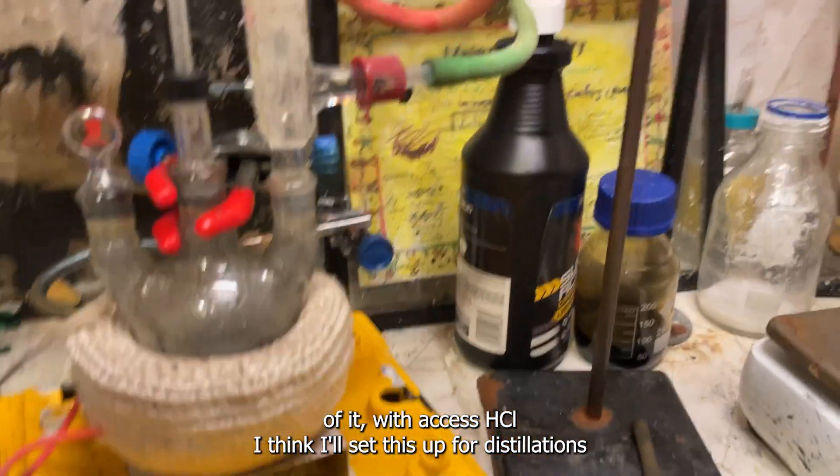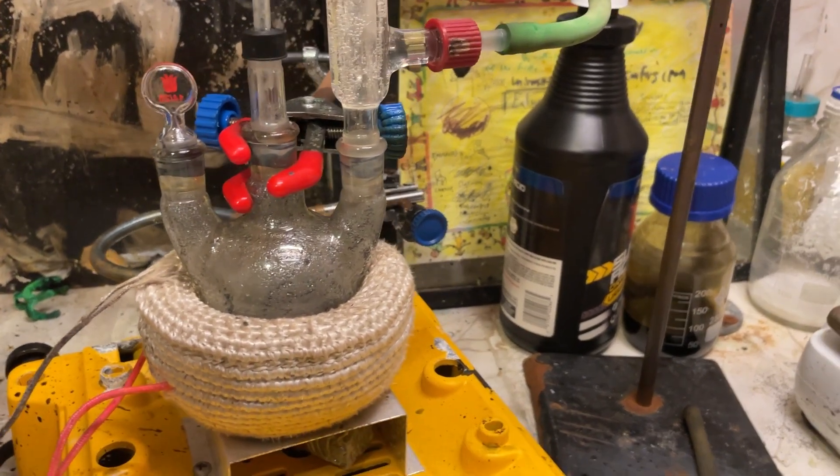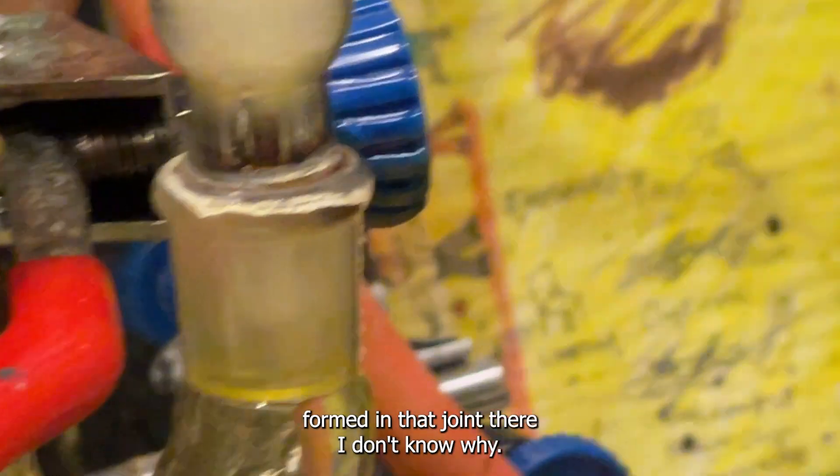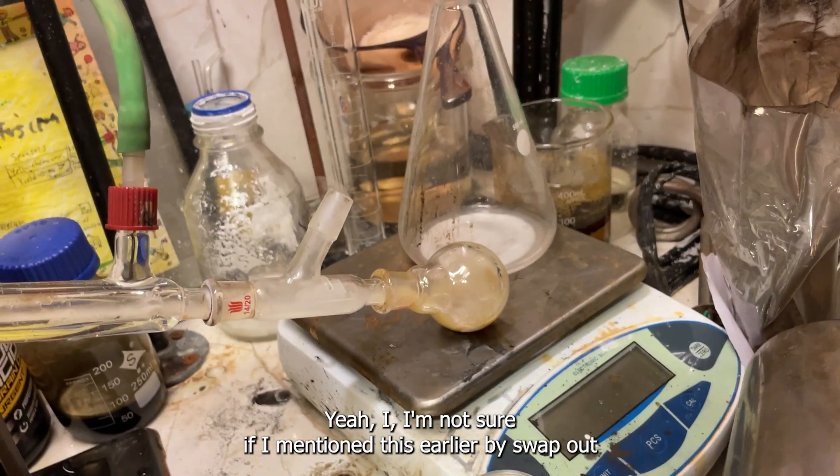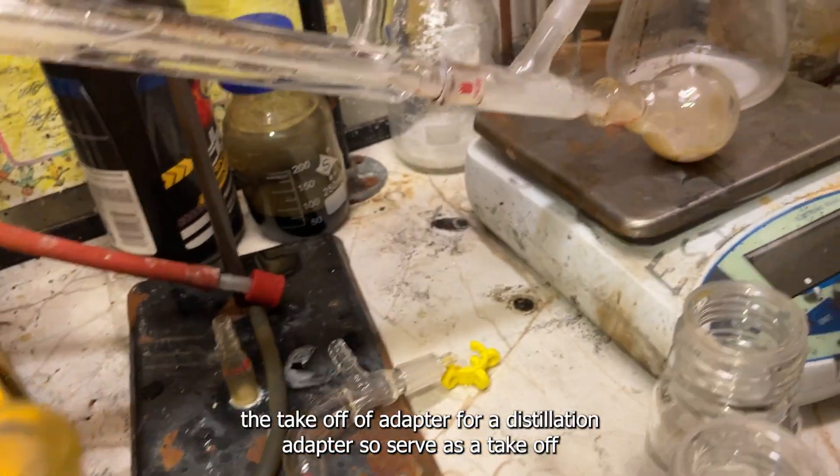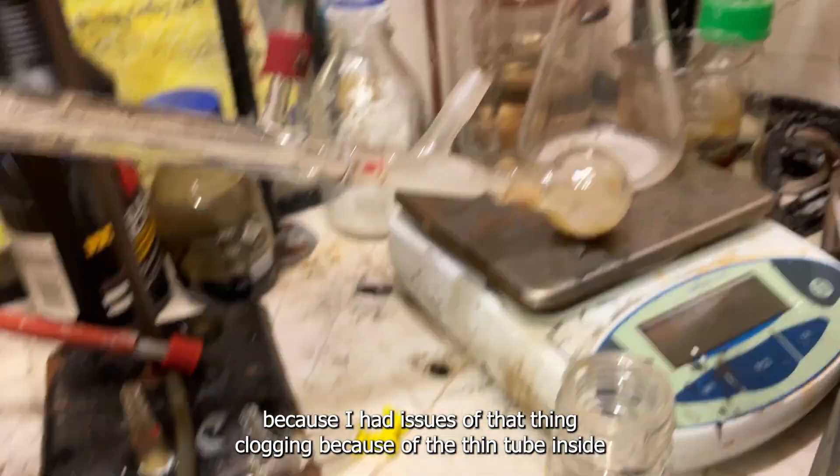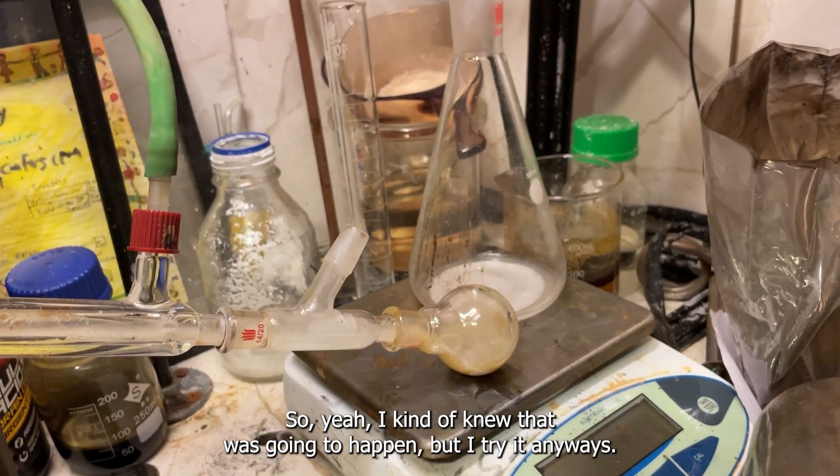I think I'll set this up for distillation with reflux, because that kind of makes a lot more sense. And yeah, apparently an antimony mirror formed in that joint there. I don't know why. Do you see it? I'm not sure if I mentioned this earlier, but I swapped out the takeoff adapter for a distillation adapter to service the takeoff adapter. Because I had issues with that thing clogging because of the thin tube inside. So I kind of knew that was going to happen, but I tried it anyways.